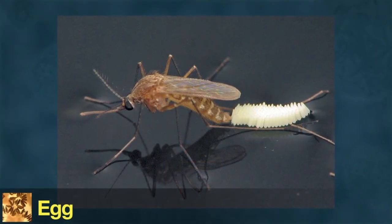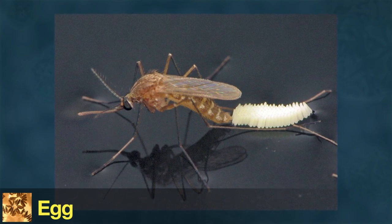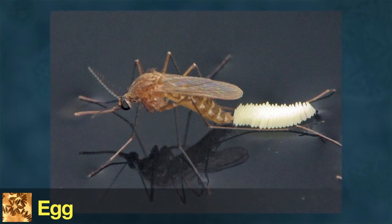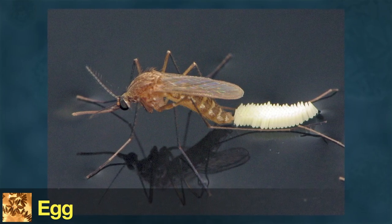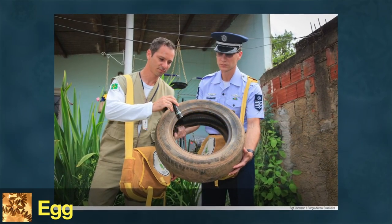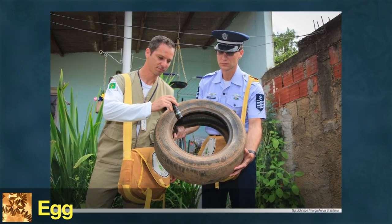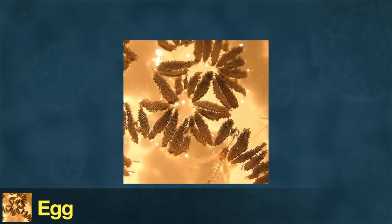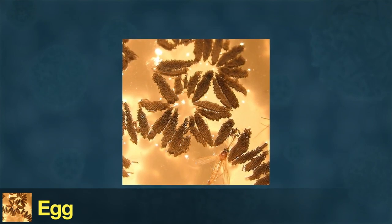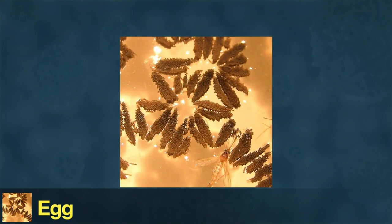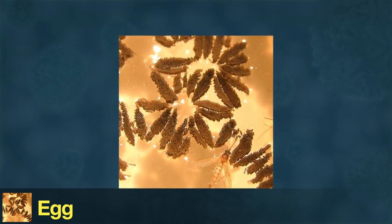Female mosquitoes lay eggs on or near a body of still water. Some species prefer natural bodies of water like ponds, while others prefer water found in containers like buckets, flower pots, or discarded tires. Each female mosquito may lay hundreds of eggs. As long as they have water, the eggs can take as little as two days to hatch, and they may hatch faster in warmer temperatures.